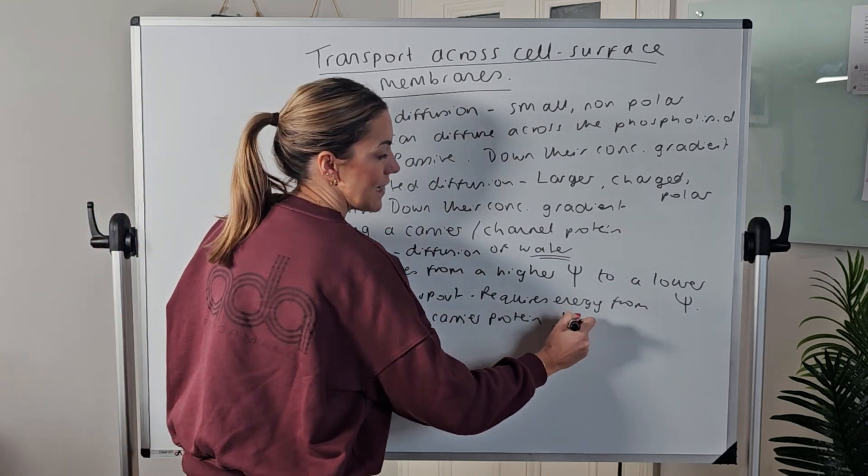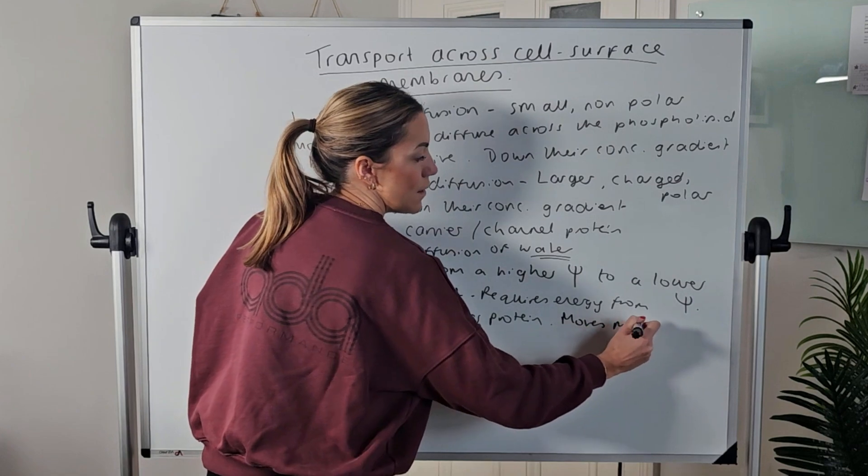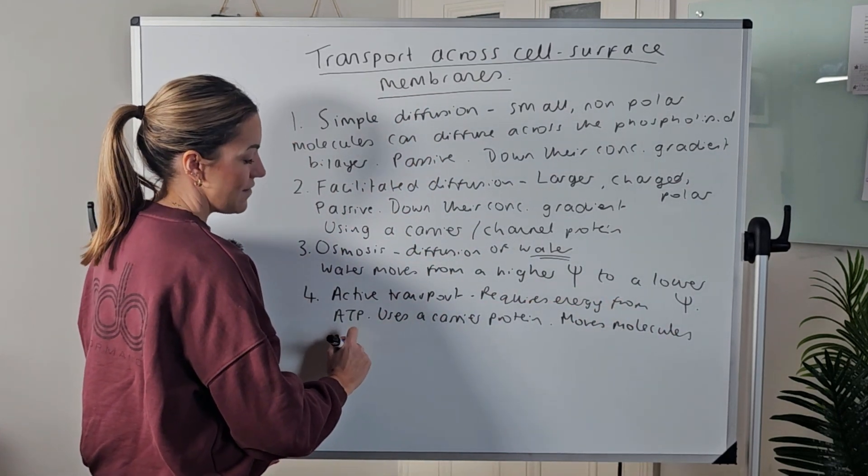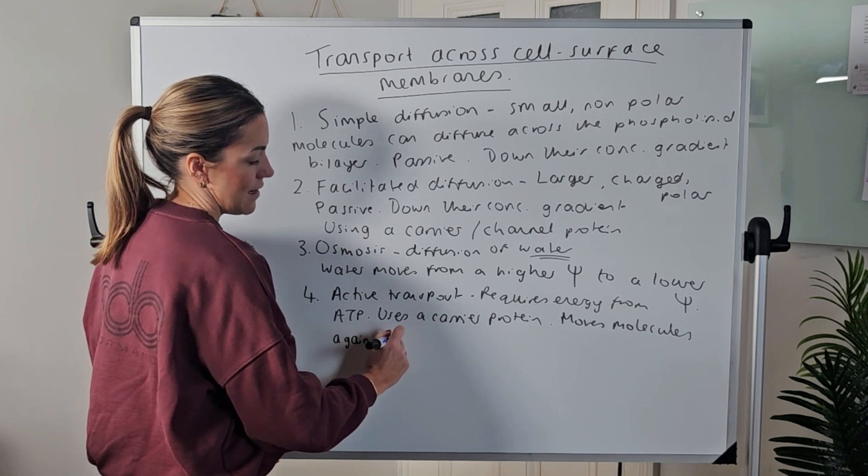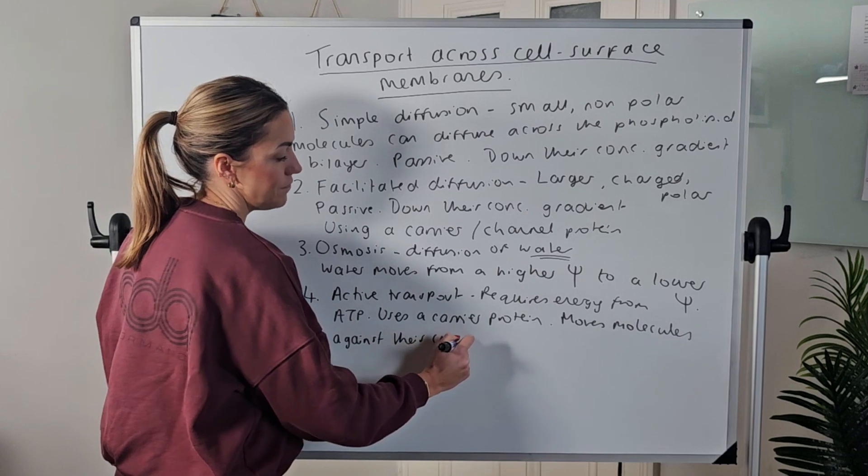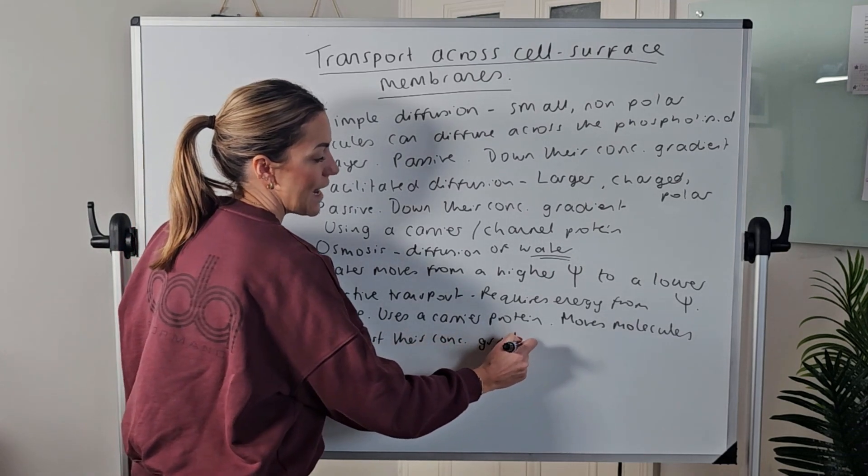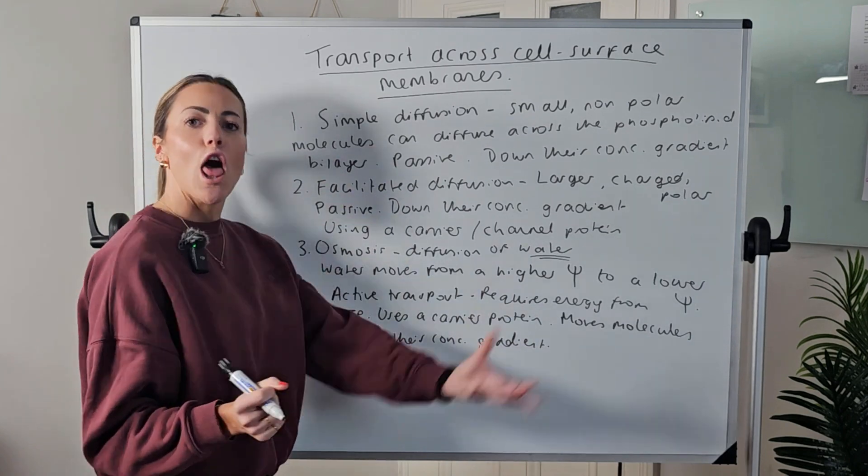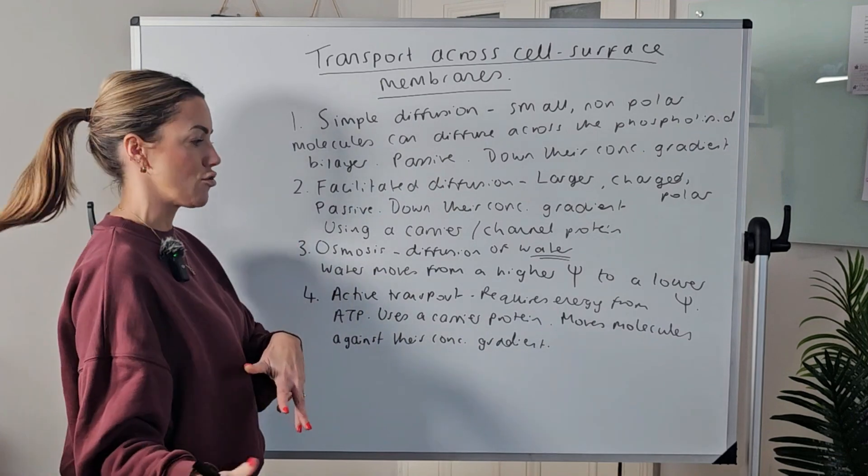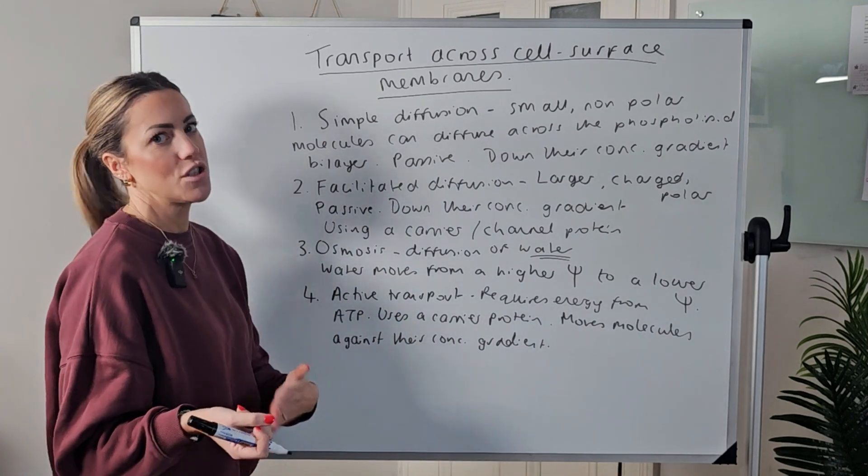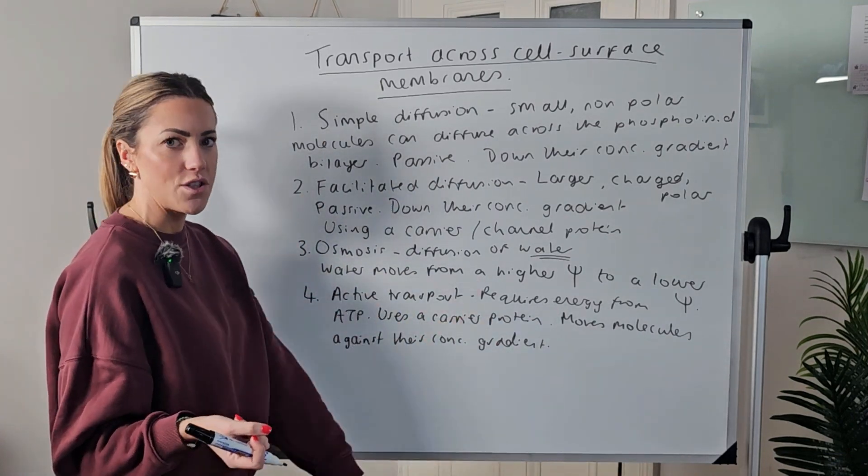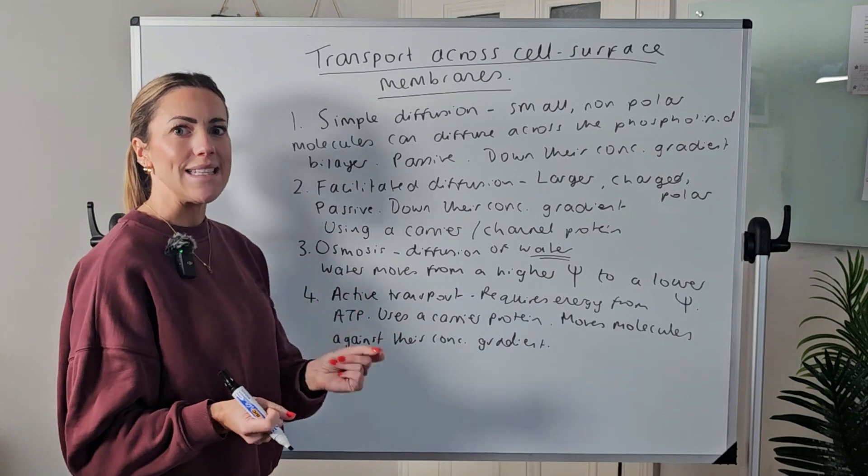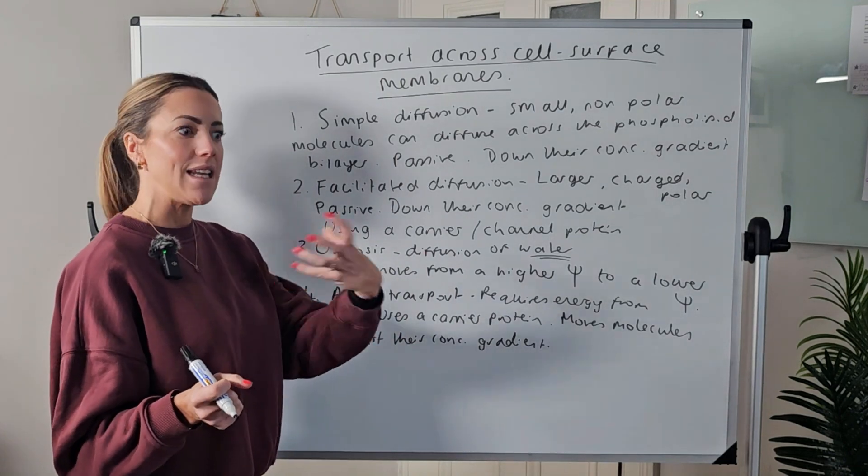Active transport uses a carrier protein which changes shape to physically move the molecule across the membrane. And the important one is it moves molecules or substances against their concentration gradient, or you can say from a region of lower concentration to a region of higher concentration. But it's against the concentration gradient, not down the concentration gradient. And this is why it requires energy from ATP, so the carrier protein can physically change shape and move that molecule against its concentration gradient.